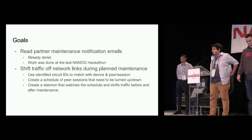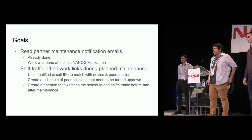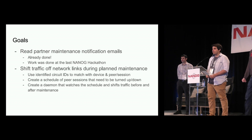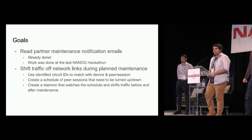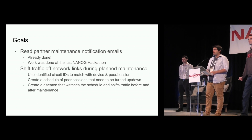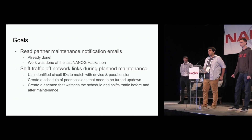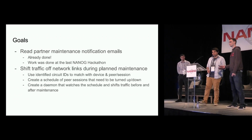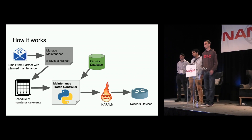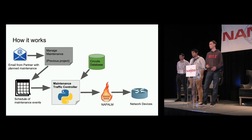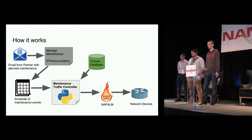As the theme was a traffic controller, this year we implemented traffic shifting off network links during planned maintenance. We used identified circuit IDs to match with the device and the peering session, then created a schedule from the emails of the peering sessions that are going to be turned down — and when to turn them down and back up. We then created a daemon that watches the schedule and shifts traffic before and after the maintenance. The first two pieces — receiving the email from partners and parsing them — were what we worked on at the previous hackathon.